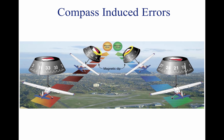The rule for northerly turning error is: when starting a turn from a northerly heading, the compass indication lags behind the turn. When an aircraft is flying on a heading of south and begins a turn toward east, the Earth's magnetic field pulls on the end of the magnet that rotates the card toward east — the same direction the turn is being made. If the turn is being made from south toward west, the magnetic pull starts the card rotating toward west, again in the same direction. The rule for this error is: when starting a turn from a southerly heading, the compass indication leads the turn.